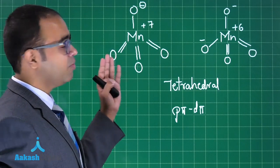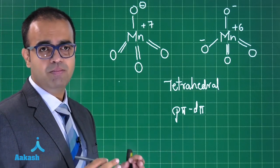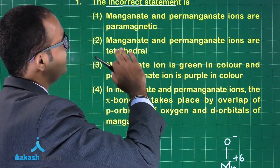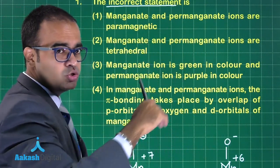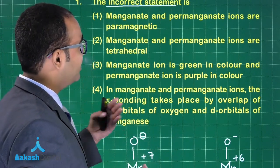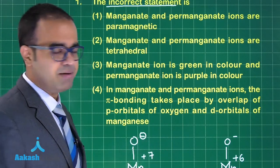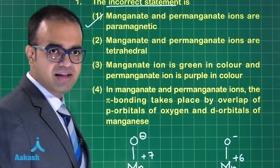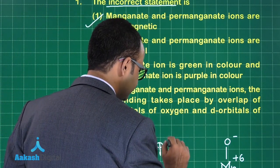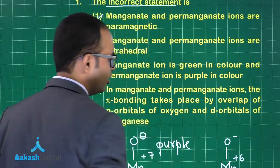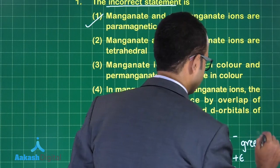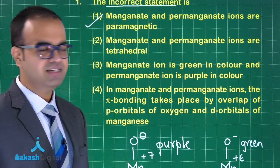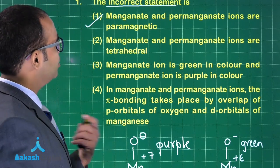MnO4²⁻ (manganate) is not paramagnetic. Looking at the options, the first statement says manganate and permanganate ions are paramagnetic — that is our answer, because manganate ion cannot be paramagnetic. Our answer is option 1. Regarding color: permanganate ion is purple and manganate ion is green. This is a moderate level question.